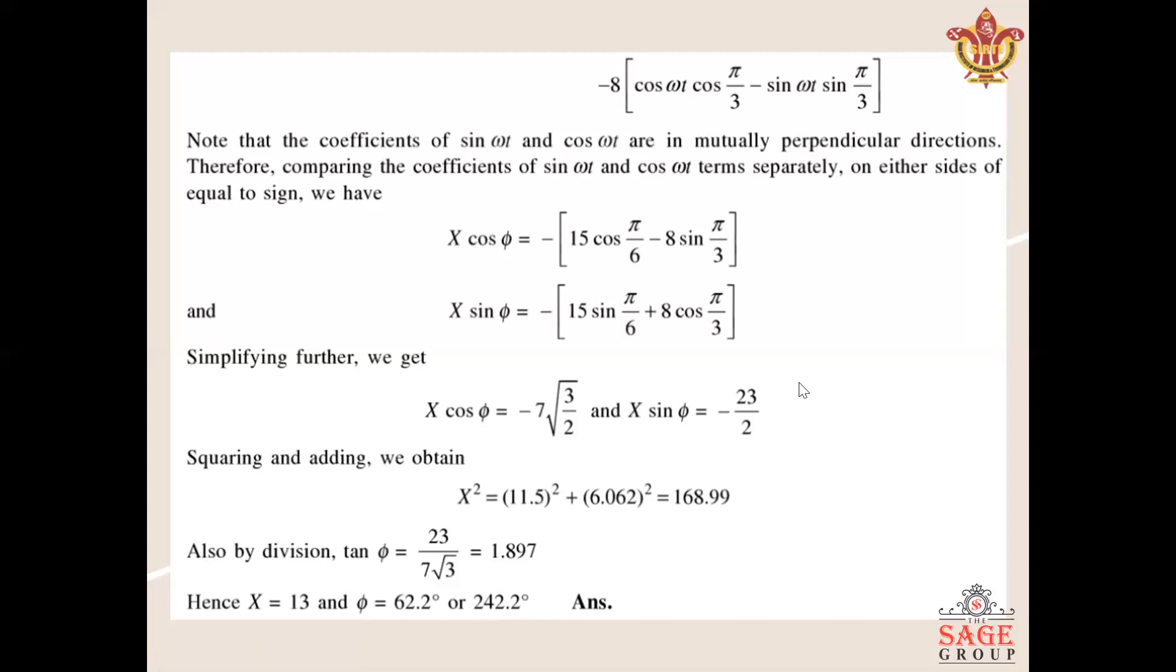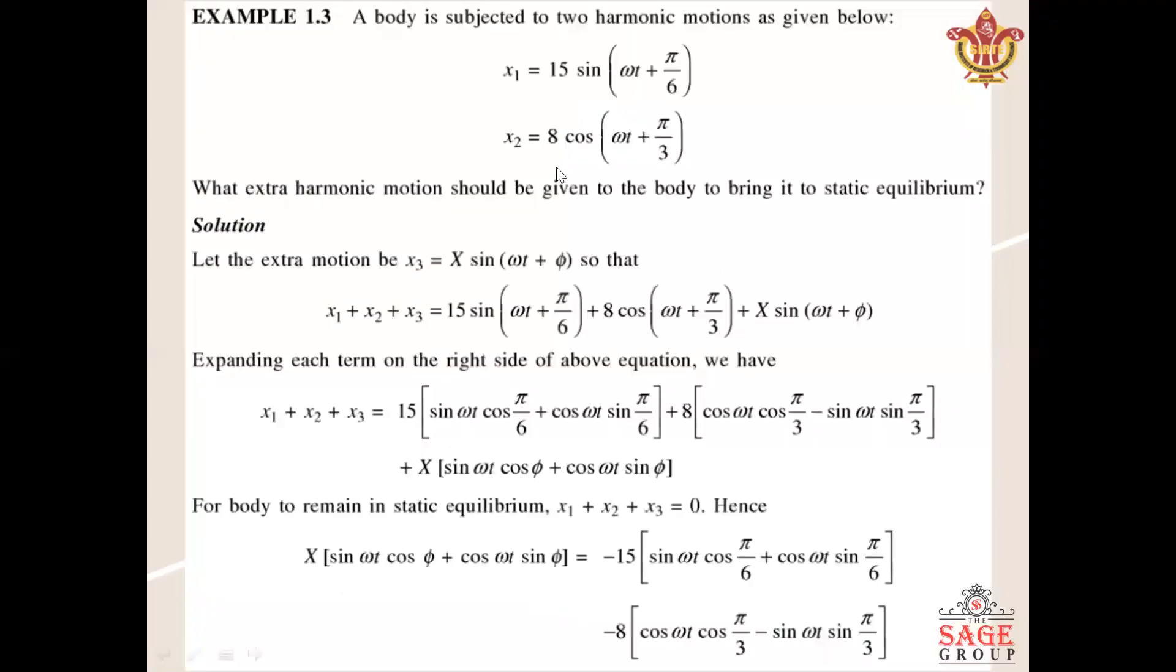This is all about the adding of two motions. This numerical can also be solved with the help of a formula: X = √(x₁² + x₂² + 2x₁x₂ cos φ).